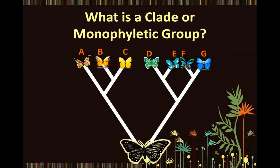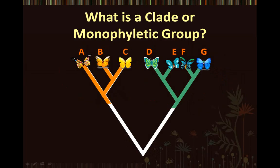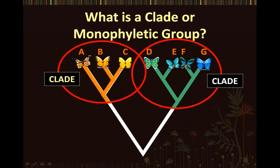Similarly, the butterflies in the group A, B, and C also represent a clade. So therefore, in this cladogram, butterflies in the group A, B, and C represent a clade, and butterflies in the group D, E, F, and G also represent a clade, which is also known as a monophyletic group.